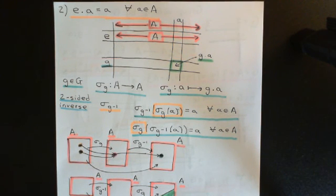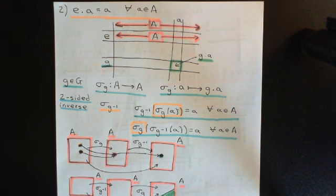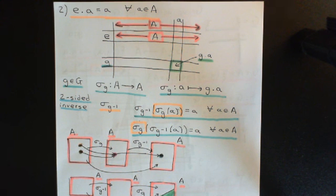Welcome back to this next video in which we are discussing group actions. In the previous video we saw that if you have a group action by a group G on a set A, then this allows you to associate with all of the elements of the group G a set permutation of the set A.